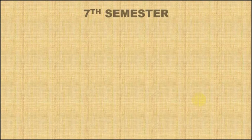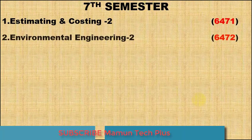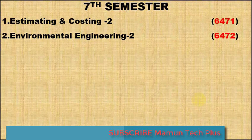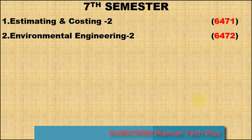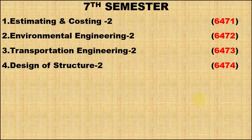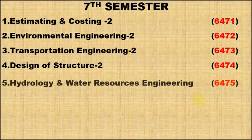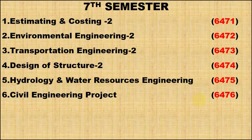Seventh semester: Estimating and Costing 2 (6471), Environmental Engineering 2 (6472), Transportation Engineering 2 (6473), Design of Structure 2 (6474), Hydrology and Water Resource Engineering (6475), Civil Engineering Project (6476).